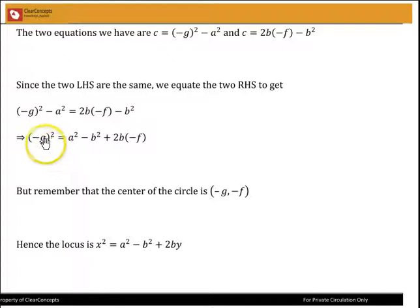Rearranging, we will get minus g whole squared is equal to a squared minus b squared plus 2b times minus f. Now we have to remember that the center of the circle is minus g comma minus f, which means we can generalize this equation now to obtain the locus. The locus is x squared is equal to a squared minus b squared plus 2by.